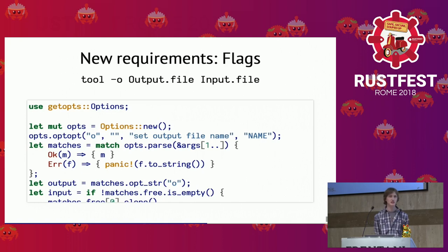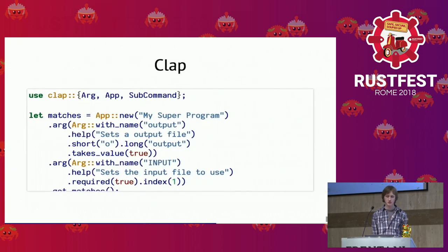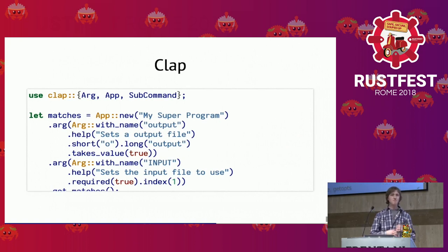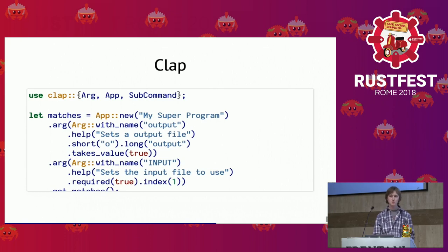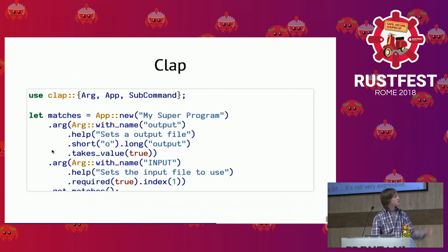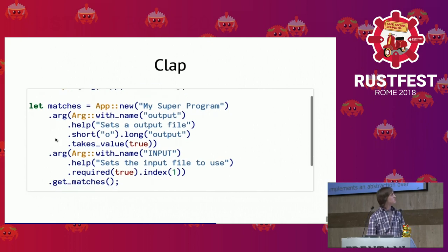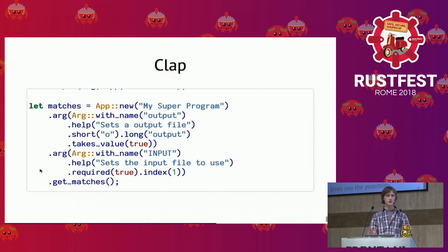Let's look at another crate that implements an abstraction over command line arguments — clap. It gives you the possibility to write down what your application should look like. There is a type called App and a type called Arg, and you compose an App with arguments. This also includes documentation and it's very expressive — all these methods let you express precisely what you want your application to look like. If you run it with '--help' you get a nice help message; '--version' gives you a version number.